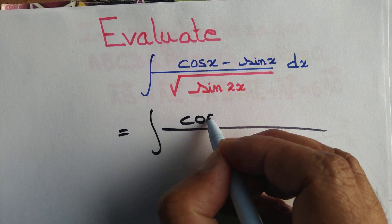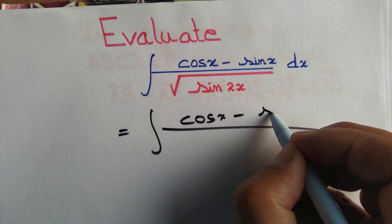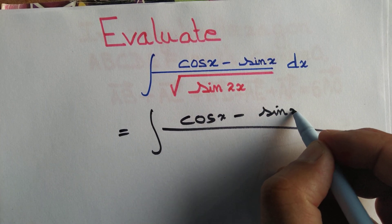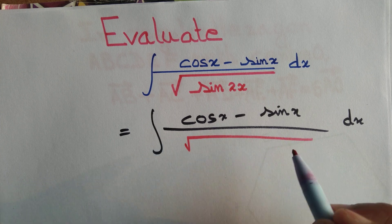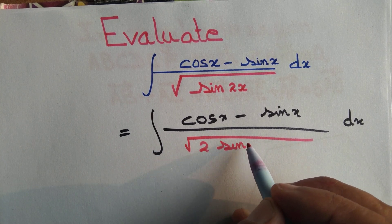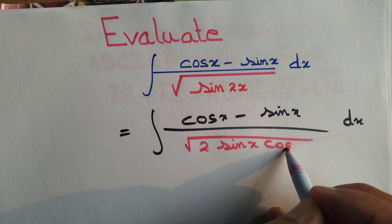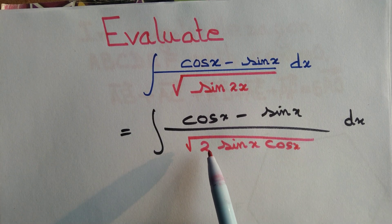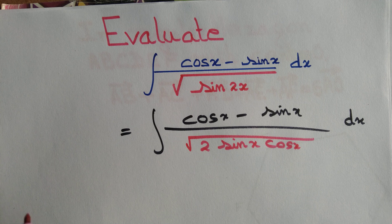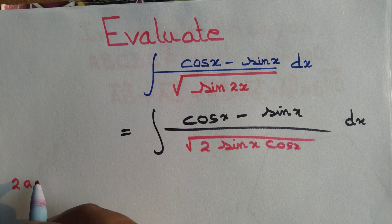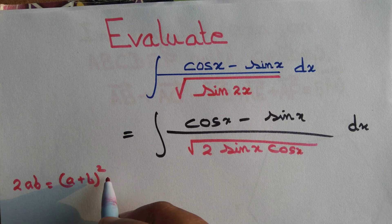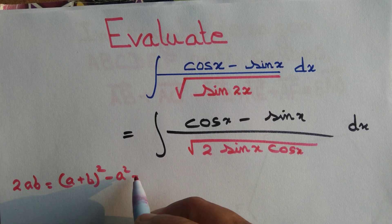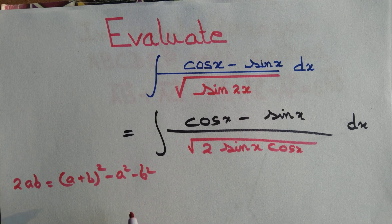So we copy the numerator as it is. The denominator sin 2x can be written as 2 sin x times cos x. Observe that this is of the form 2ab, and we know that 2ab equals (a + b)² minus a² minus b².